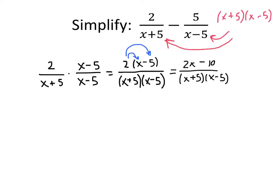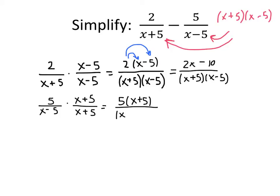Now we need to rewrite our second fraction with that same common denominator. We've got 5 divided by (x minus 5). To make that have our common denominator, we need to multiply top and bottom by (x plus 5). So on the top we have 5 times the quantity (x plus 5), and on the bottom we have our common denominator, (x plus 5) times (x minus 5). Once again we'll distribute on the top, so we get 5x plus 25 — we distributed 5 times x and 5 times 5 — all over (x plus 5) times (x minus 5).